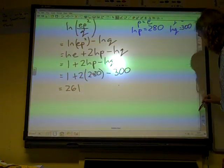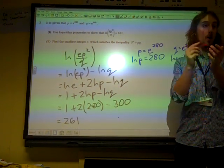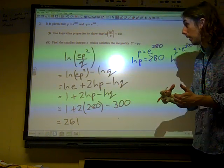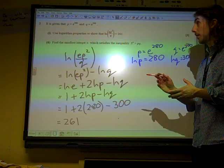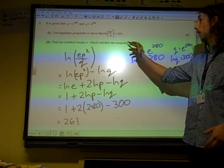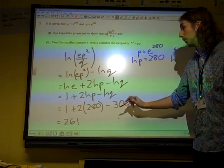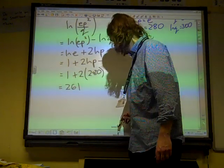Part B, find the smallest integer. Actually, part 1 of this wasn't desperately well done. But part 2 was done really quite well. And lots of people picked up at least some marks for this. The smallest integer which satisfies the inequality, 5 to the N is greater than P times Q.